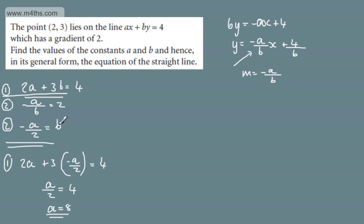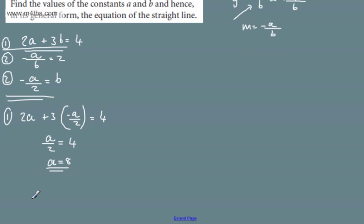All I'm going to do is substitute this into equation 2. So, if we write now equation 2, we're going to have now minus 8 over 2 is equal to b. So, we can see that b will be equal to minus 4.